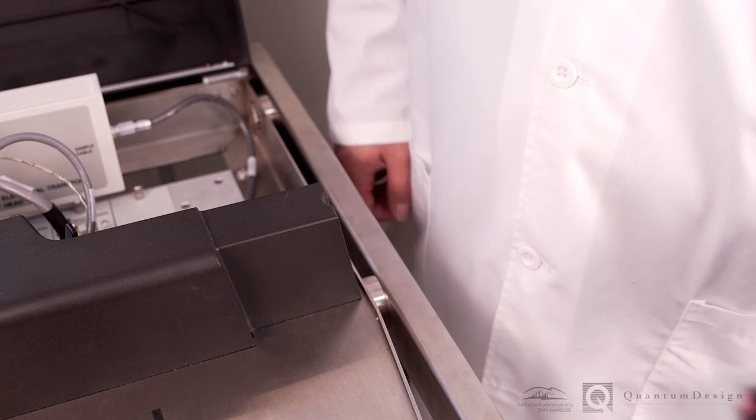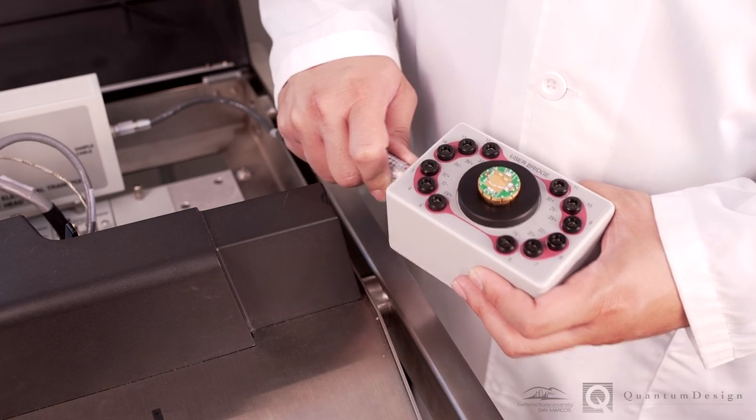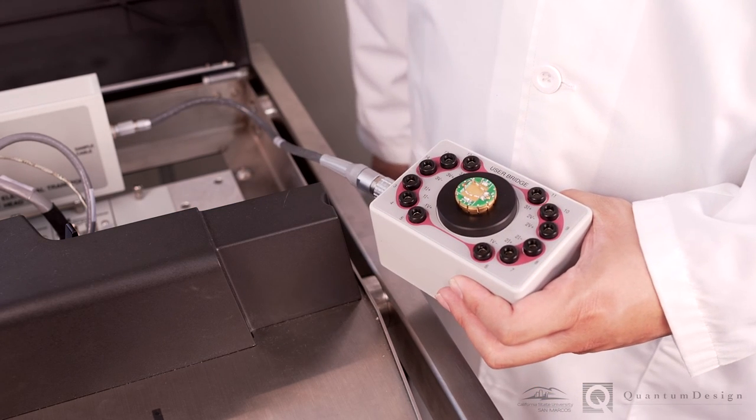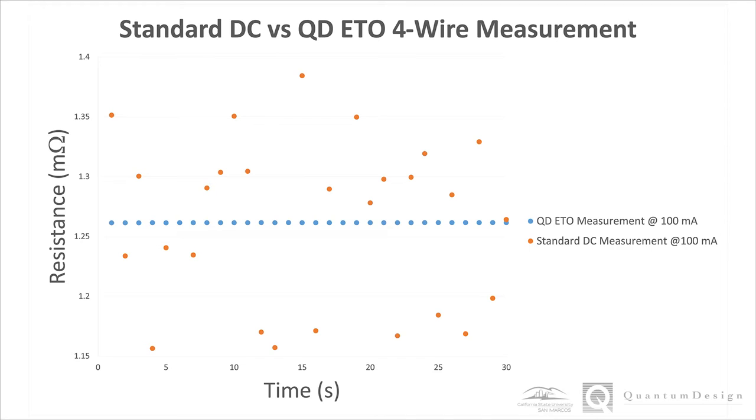Now we will perform a 4-wire measurement on the copper wire using the ETO module and compare that to measurements obtained using a standard DC source and voltmeter. We take a reading every second. When you compare the standard DC measurement in orange to the Quantum Design ETO measurement in blue, you can see that the ETO performs a far less noisy measurement at this level.